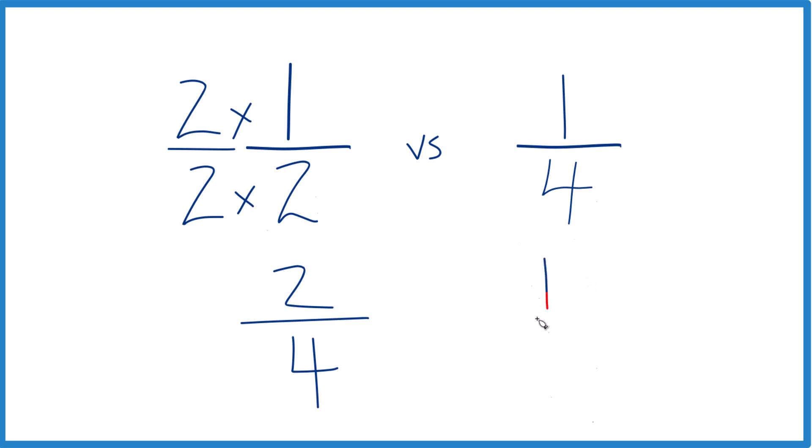And then we have one-fourth over here, and you can see two, that's greater than one. So two-fourths is greater than one-fourth. One-half a cup is greater than one-fourth a cup. And it's one-fourth of a cup greater. One-fourth plus one-fourth would equal one-half cup.